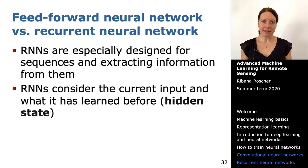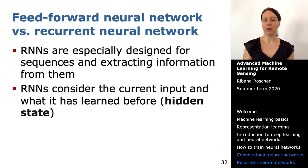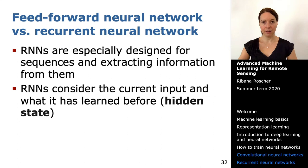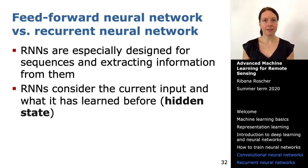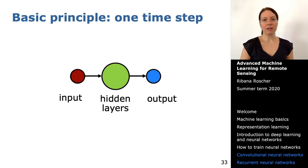The basic idea of an RNN is that the current input from the current time step is combined with what has been learned before. What has been learned is stored in a hidden state — the hidden representation from the last time step. You combine the new and the old, and this information is transported over time.